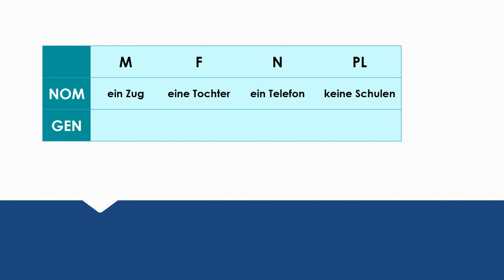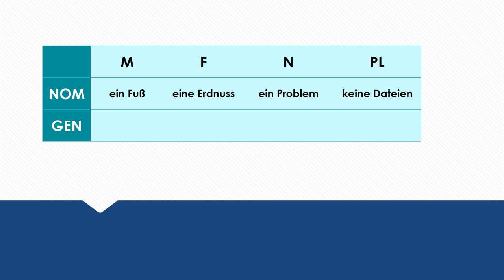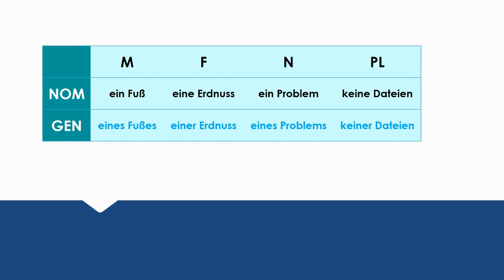Some more practice. Ein Zug, eine Tochter, ein Telefon, keine Schulen. The genitive forms are: eines Zuges, einer Tochter, eines Telefons, keine Schulen. And some more practice: ein Fuß, eine Erdnuss, ein Problem, keine Dateien. The genitive forms are: eines Fußes, einer Erdnuss, eines Problems, keine Dateien.